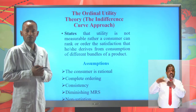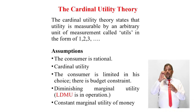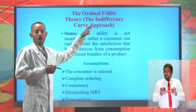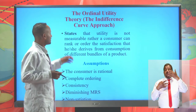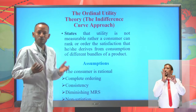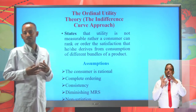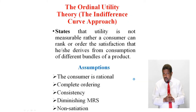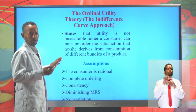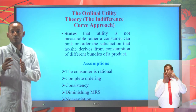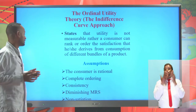In the previous revision, we saw the cardinal utility theory, which is a theory that states utility is measurable. Under the ordinal utility theory approach, or the indifference curve approach, utility is not measurable. That means it is difficult to attach numbers to the satisfaction that we derive from consumption of goods and services. Rather, a consumer can rank or order the satisfaction derived from consumption of goods and services.